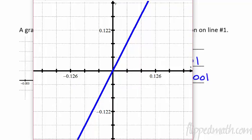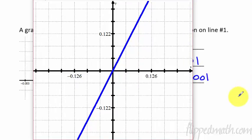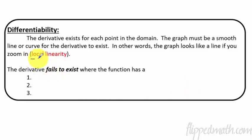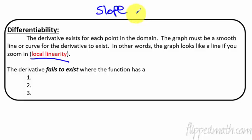So that leads us to defining differentiability. The derivative is going to exist for each point in the domain. If a function is differentiable, that means we have a derivative everywhere on that function. Another way of thinking about this is that the graph must be smooth — a smooth line or curve — in order for the derivative to exist. If you zoom in really close and it's a line, that means locally it is a line. It's called local linearity. If we zoom in really close and it looks like a line, therefore we can take the derivative — because what's the derivative? It's slope.